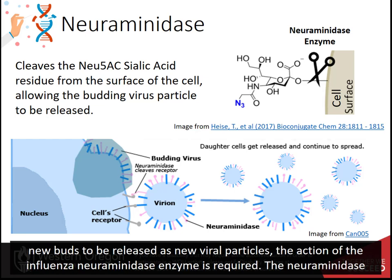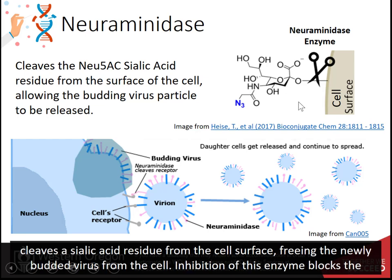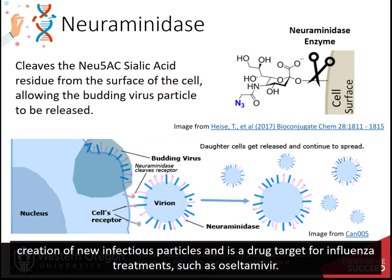For these new buds to be released as new viral particles, the action of the influenza neuraminidase enzyme is required. The neuraminidase enzyme cleaves the sialic acid residue from the cell's surface, freeing the newly budded virus from the cell. Inhibition of this enzyme blocks the creation of new infectious particles and is a drug target for influenza treatments such as oseltamivir.